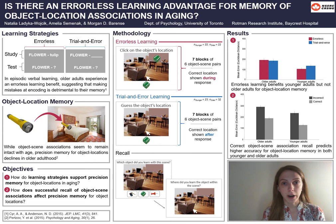Usually, healthy older adults benefit from errorless learning, which prevents them from making mistakes during encoding that might interfere with the learning of the correct target word. Conversely, this means that mistakes made during trial and error are detrimental to memory in older adulthood.